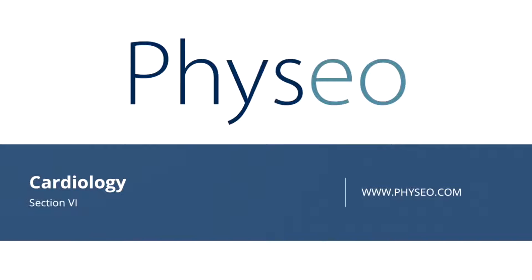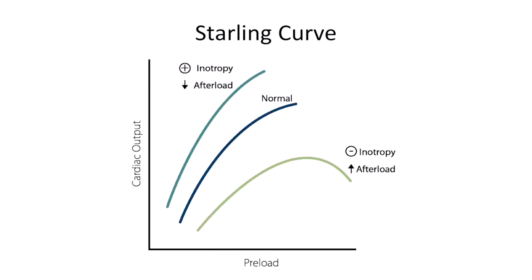Welcome to section six of cardiology. In this section I will be discussing the Starling curve and cardiac and vascular function curves. This is figure 2.8 from your text which shows a Starling curve. The y-axis is cardiac output and the x-axis is preload. Let's look at the normal line first.